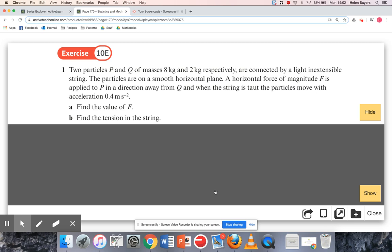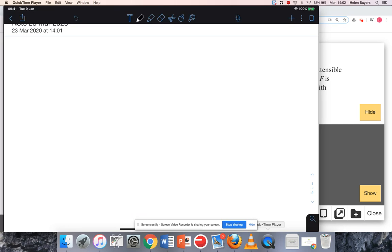So exercise 10e question one, we've got two particles that are joined with a light inextensible string. The first thing I'm going to do is draw that into a diagram.